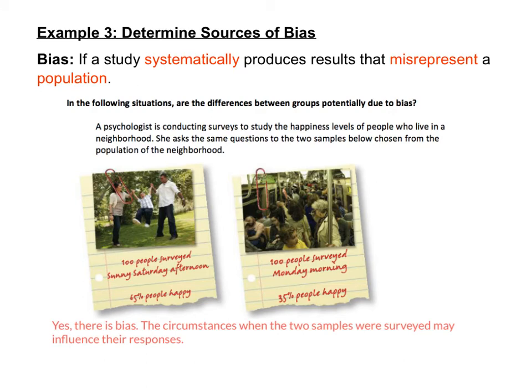Is there bias between these two groups? Yes — the circumstances when the two samples were surveyed may influence their responses. It makes sense that people say they're happy more on a sunny Saturday afternoon in the middle of the weekend versus on a Monday morning when they're rushing back to work. Plus, most people do not like Monday. There might be bias between the results just because of the situations in which they were asked.